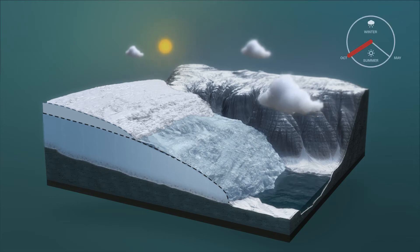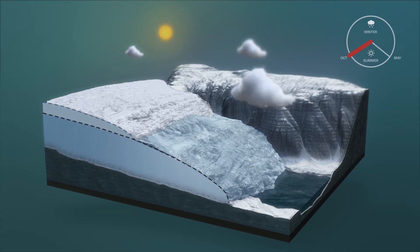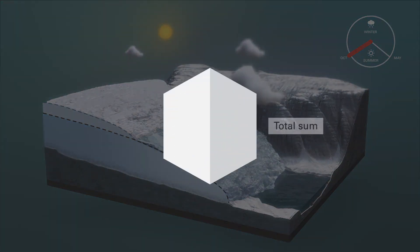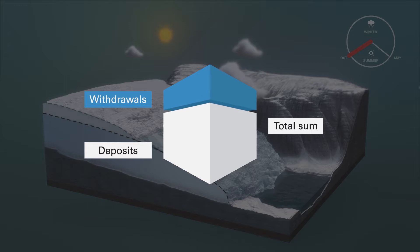A glacier shrinking in size. Now we would like to tell you how and why a glacier shrinks during certain periods and under certain climatic conditions. A glacier is like a savings bank, a system where a series of deposits and withdrawals affect the whole sum.